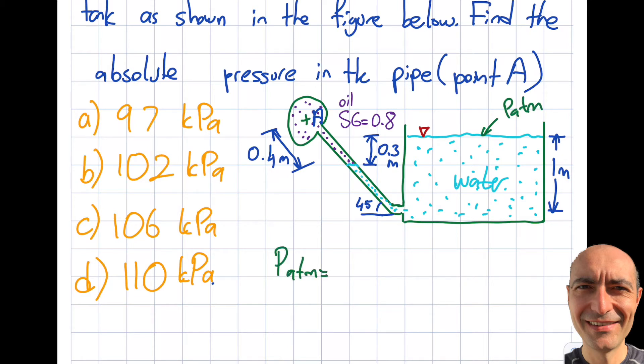So let's start with that. P_ATM will be equal to 101,325 Pascal. I will have a question for you. In this line, can I say that the pressure is constant? The answer is yes.